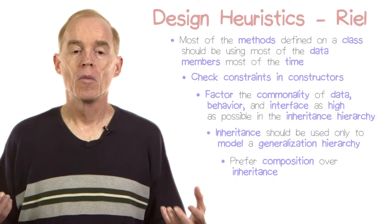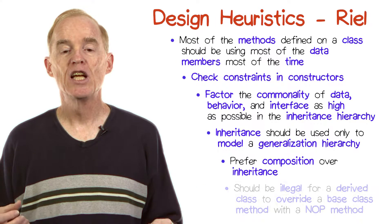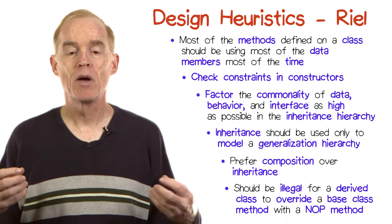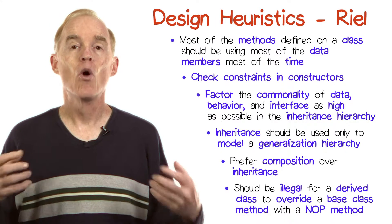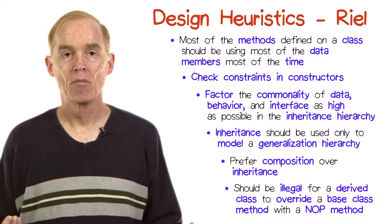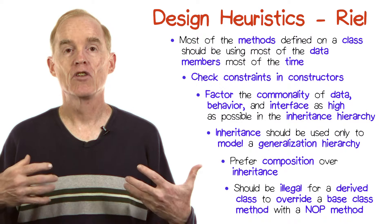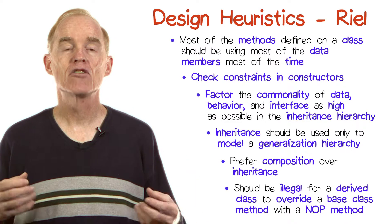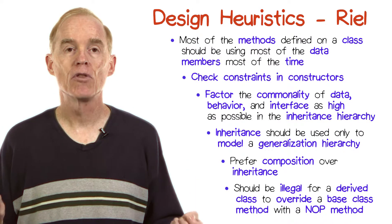Another heuristic: it should be illegal for a derived class to override a base class method with a no-op method — that is, essentially a method that does nothing instead of the behavior that the base class prescribes. Doing so would violate the substitution principle that we saw earlier.